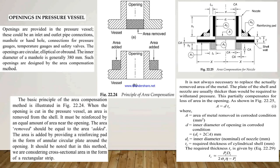Next is the openings in pressure vessels. Openings are provided in pressure vessels for inlet and outlet pipe connections, manholes, or handholes, and connections for pressure gauges, temperature gauges, and safety valves. The openings are circular, elliptical, or oblong. The inner diameter of the manhole is generally 380 mm. Such openings are designed by using the Area Compensation Method.